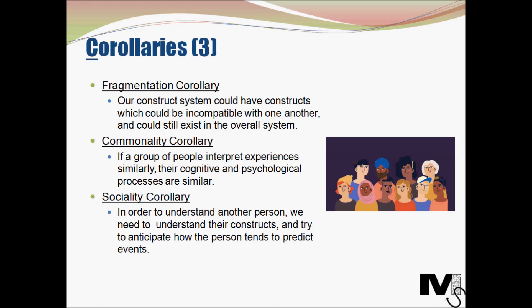The next type of corollary is the fragmentation corollary. Kelly proposed that our construct system could have constructs which could be incompatible or inconsistent with one another and could still exist in the overall system. If an individual is failing to predict or control life, an incompatible construct could have been chosen. Choosing incompatible constructs could result in unpredictable behaviour from people.